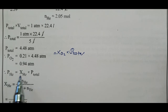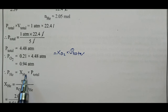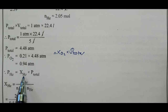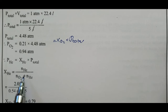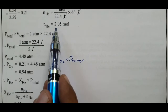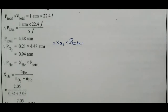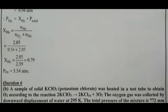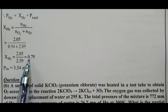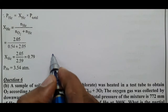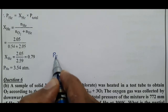Partial pressure of He = mole fraction of He × total pressure. Mole fraction of He = number of moles of He / total moles = 2.05 / 2.59 = 0.79.